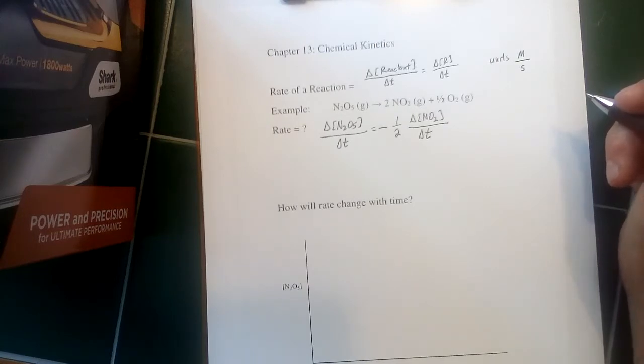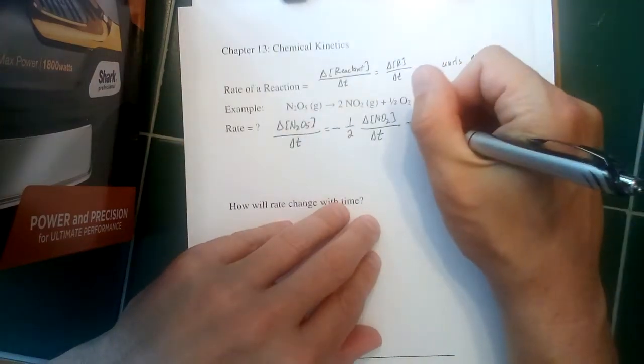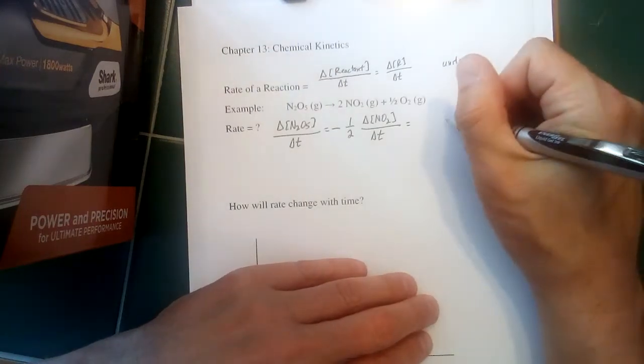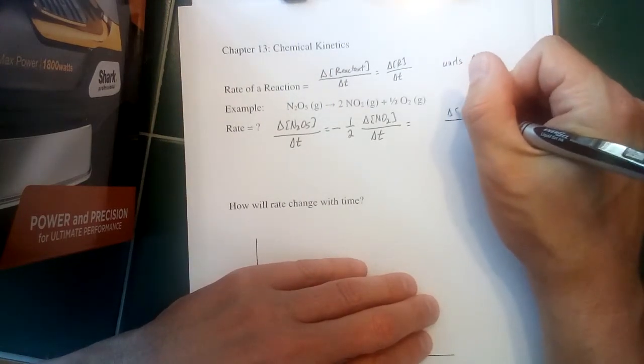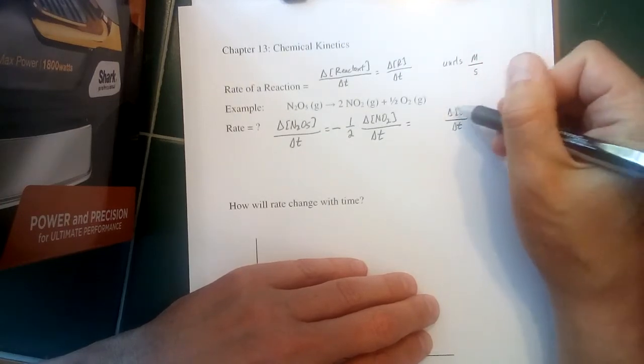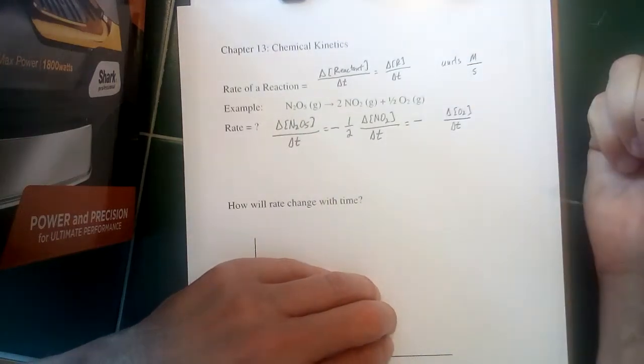Now, similarly, we could define the rate in terms of the other product, the oxygen. So if we take the change in concentration of O2 relative to the change in time, now, again, that's going to be negative if we take initial minus final. So we'll put in a negative sign to make sure it's a positive number.